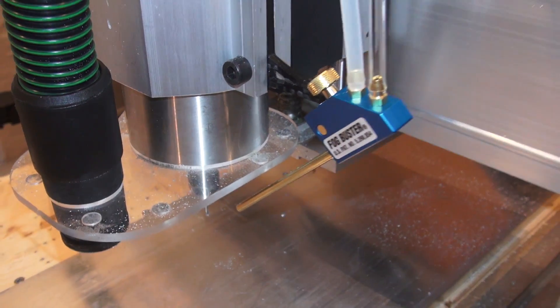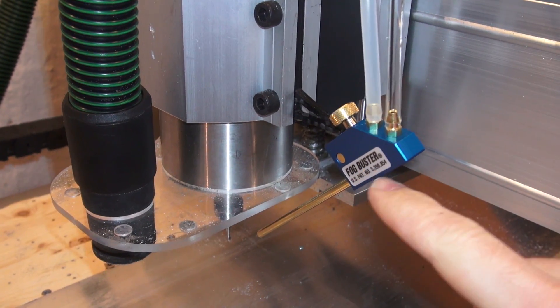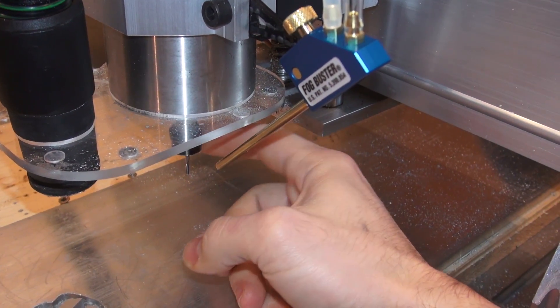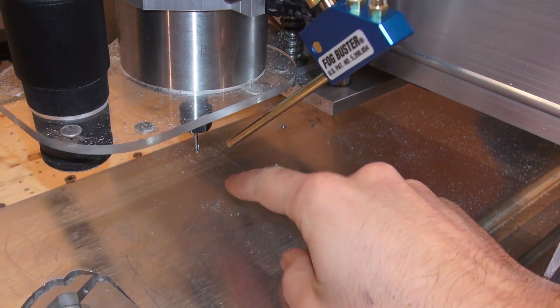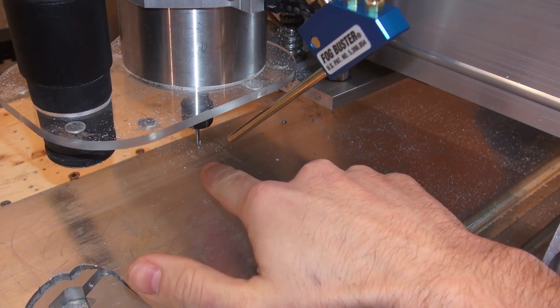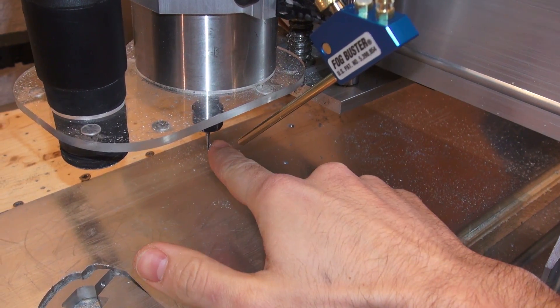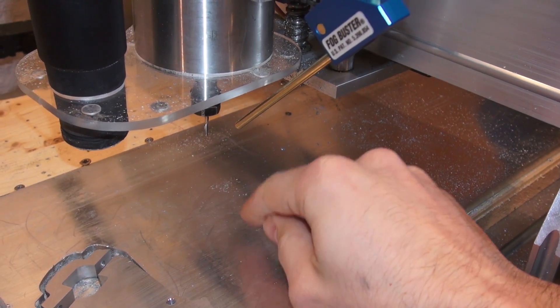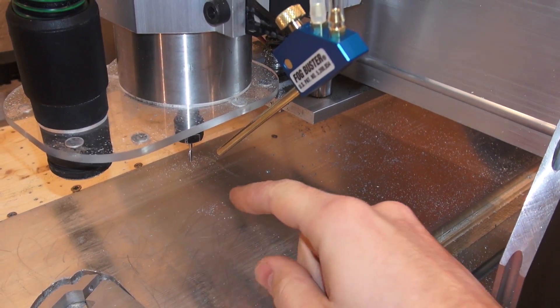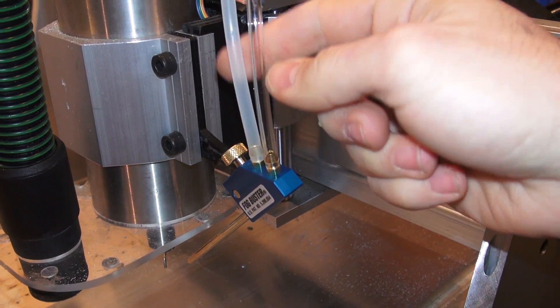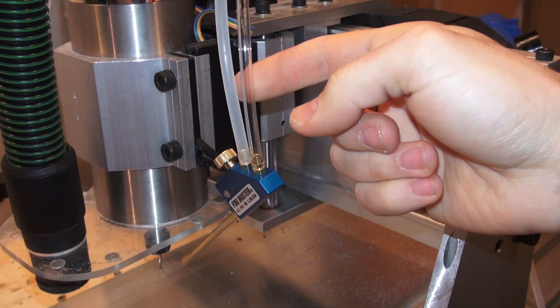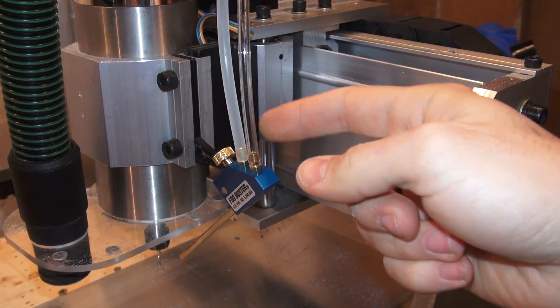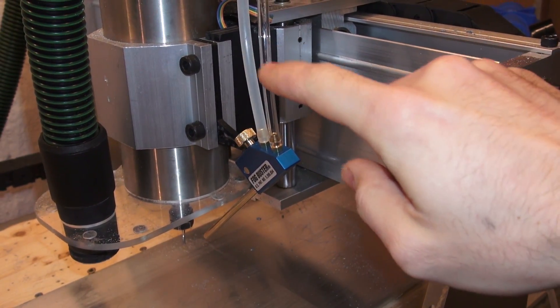So what I did is installing one of those fog buster systems. This is for basically cooling the tool and also blowing away the chips so the tool can't clog up with the milled aluminum. And it's a mixture from air and water. The water is actually mixed with windshield wiper washer fluid, the one for the summer season.